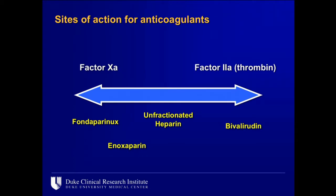You must have some direct Factor IIa activity to prevent catheter thrombus. Fondaparinux has no role by itself in the cath lab — it's an indirect Factor Xa inhibitor with no direct IIa activity. In the OASIS 5 and 6 trials, there was an increased rate of catheter thrombosis, necessitating a protocol amendment to add heparin or bivalirudin. So the agents we'll focus on are enoxaparin, unfractionated heparin, and bivalirudin.